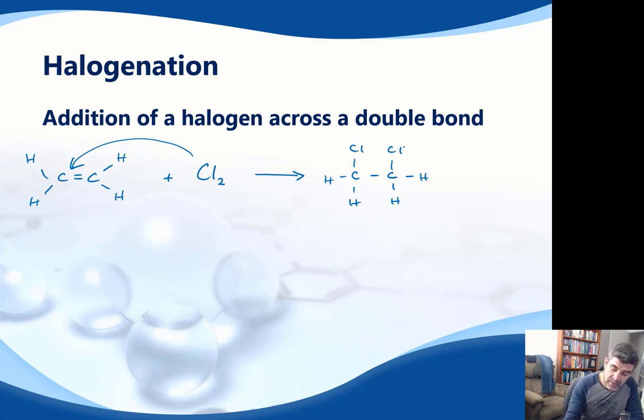So this time our product would be 1,2-dichloroethane, where it's our halogen that's added across the double bond. Again, two reactants and just the one product.